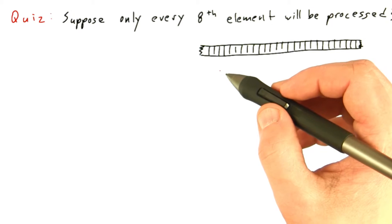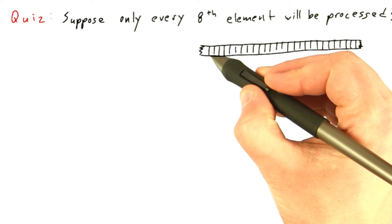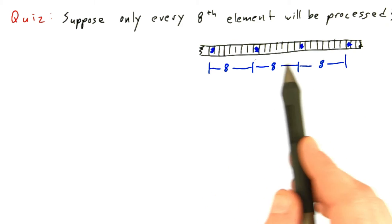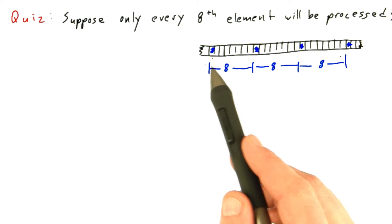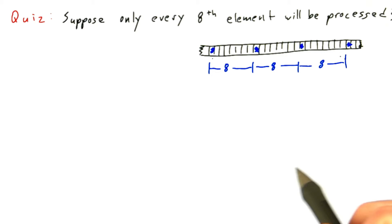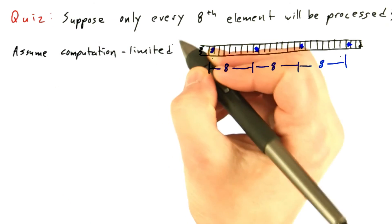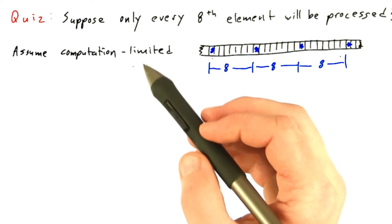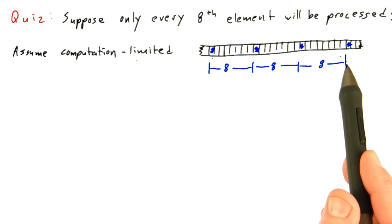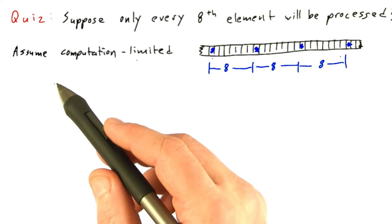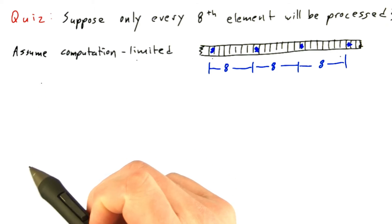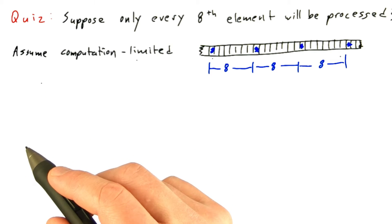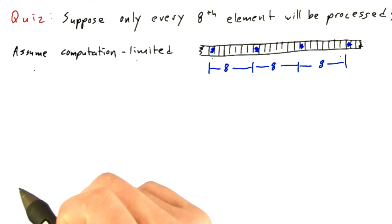So as a quiz, suppose that only every eighth element will be processed. Here I've drawn the elements that will be processed, and all the ones left blank will not be processed. Assume that we're compute limited - in other words, that whatever operation we're going to do on every eighth element is expensive, and that's the limiting factor rather than the memory bandwidth to fetch elements.